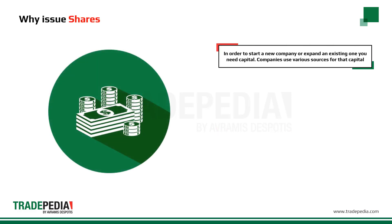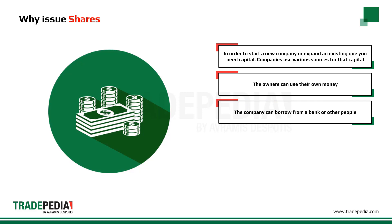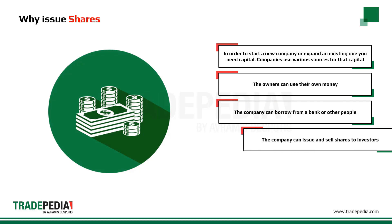In order to start a new company or expand an existing one, you need capital. Companies use various sources for that capital: the owners can use their own money, the company can borrow money from a bank or from other people, or the company can issue and sell shares to investors.